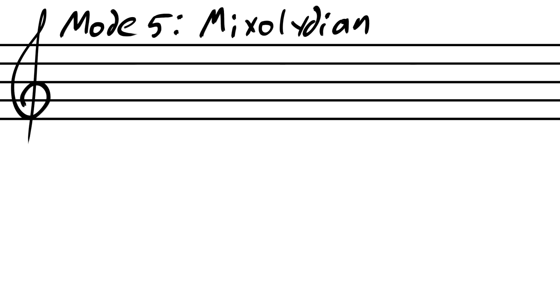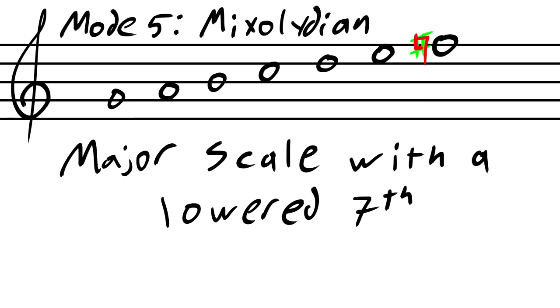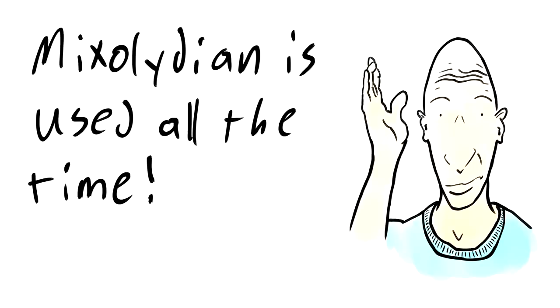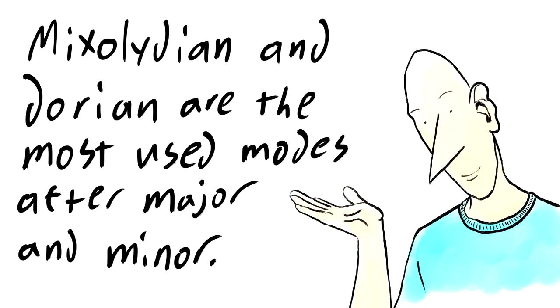The fifth mode is Mixolydian. I know, why do the names gotta be like this? Just try not to mix them up. This one is like a major key, but with a lowered seventh. This mode is used so often, it's crazy. Rock music uses it a ton. You could listen to almost any Soundgarden song and hear it. Medieval and renaissance music use it in place of other major modes. And blues and jazz. This one and Dorian are used the most after normal major and minor.